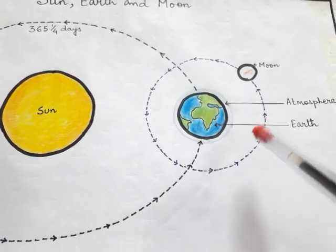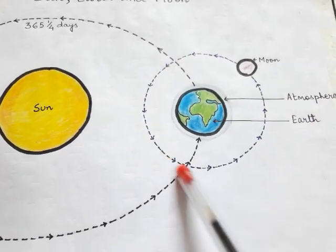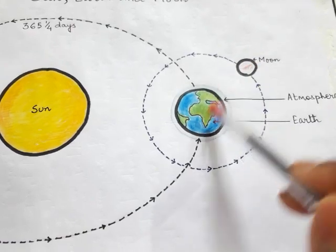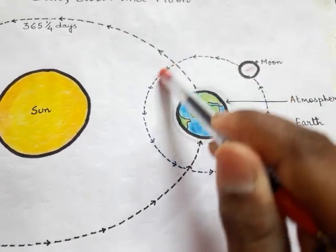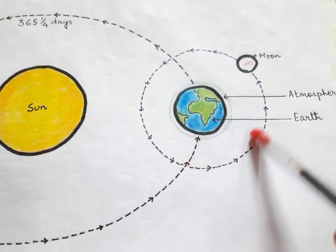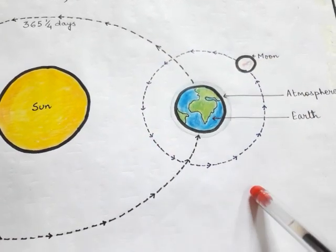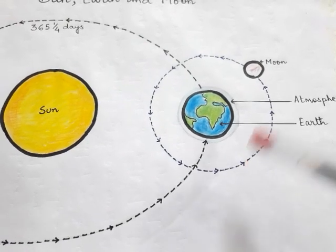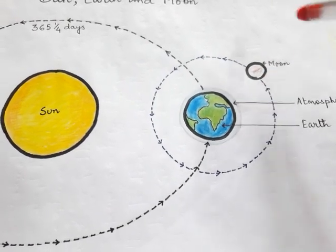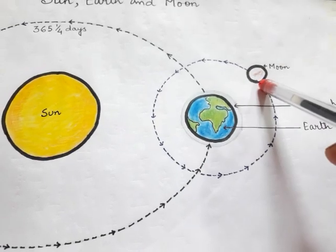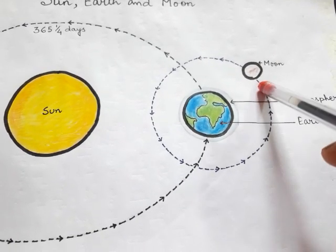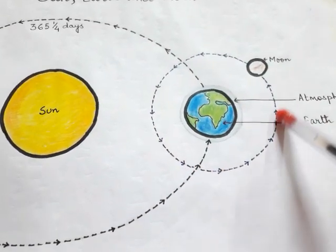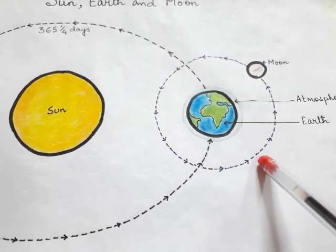The Moon revolves around the Earth because it is the natural satellite of the Earth. There are also man-made satellites which humans create. The Moon is the natural satellite that revolves around the Earth on its fixed path.